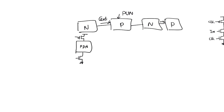This dynamic gate alone is not our building block. Our building block is the dynamic gate followed by a static CMOS inverter — a normal CMOS inverter. This is our building block.